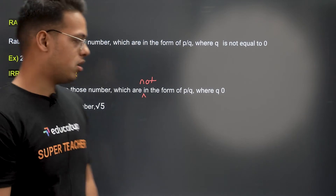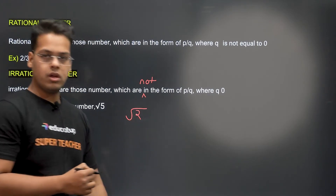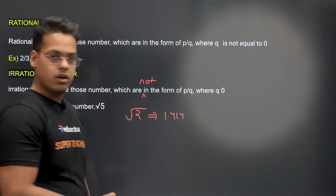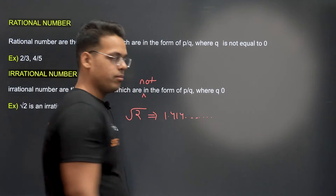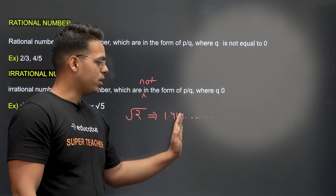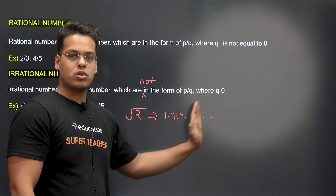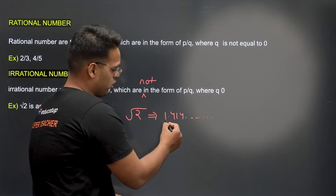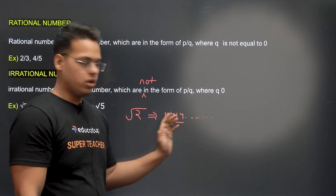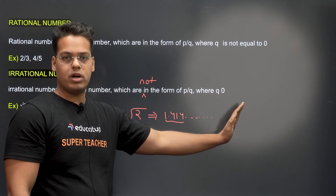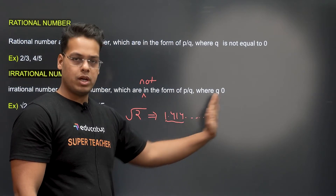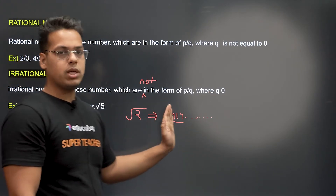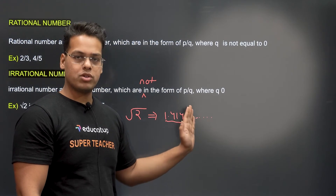For example, root 2 is an irrational number. The value of root 2 is 1.414... — the dots mean there is no ending, no termination point. We don't know the exact value; its approximate value is 1.414, but it keeps going. Since we can't find the termination point, we cannot convert it into P upon Q form, so we cannot call it a rational number.